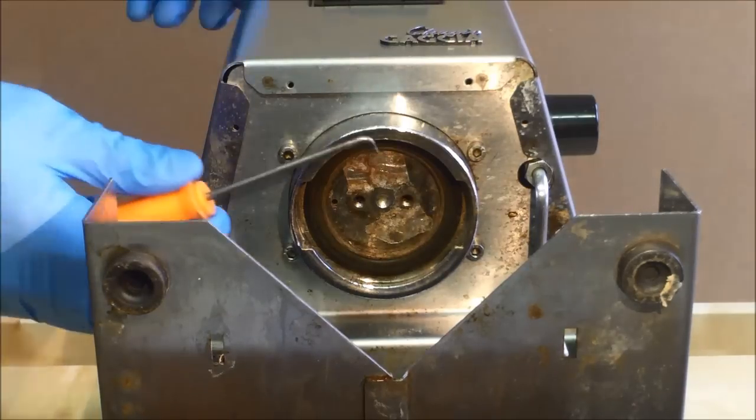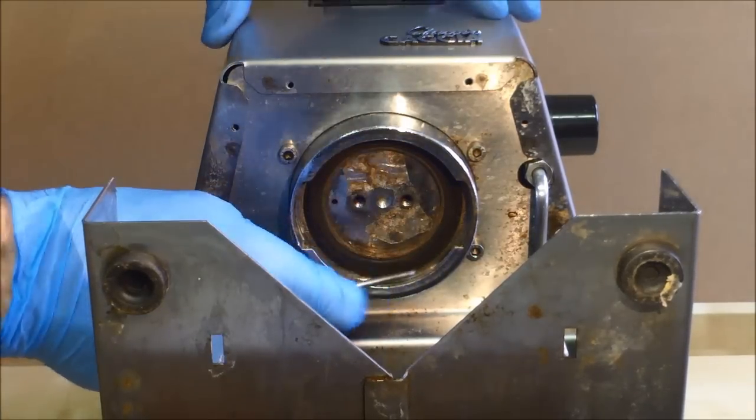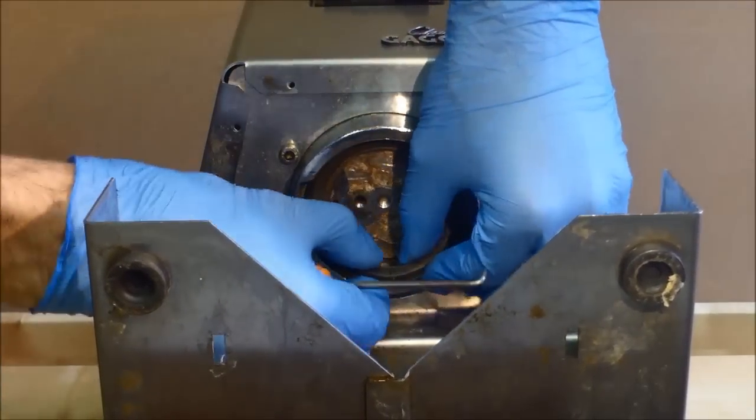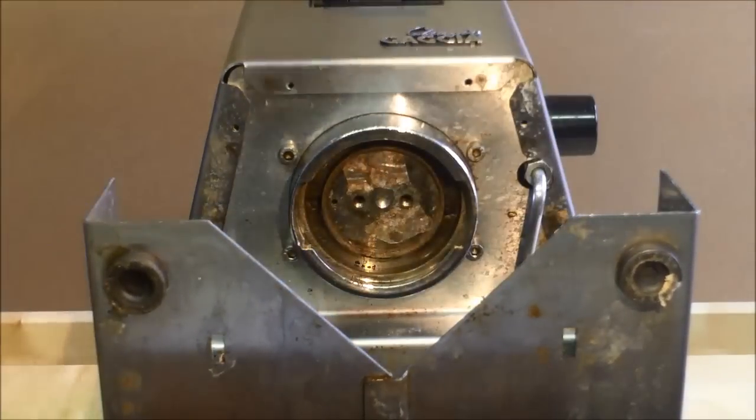Step 6: Now you have access to the group gasket, which you also might find hard to remove, especially if it's been untouched for a long time. We have a hook-formed pricker to make the job easier, but a strong flat screwdriver should also do the job.